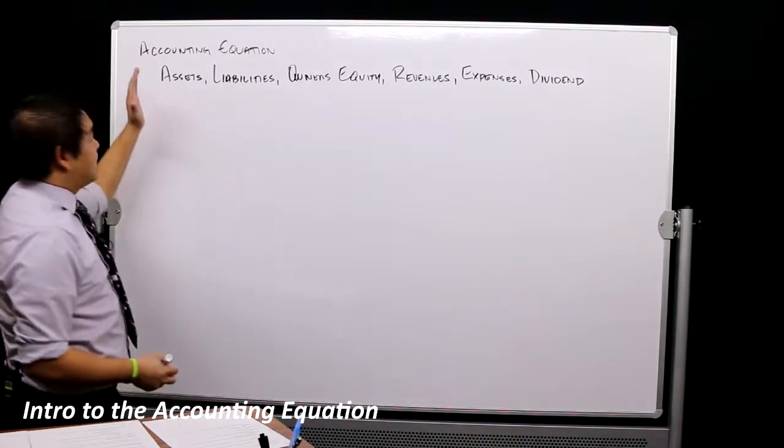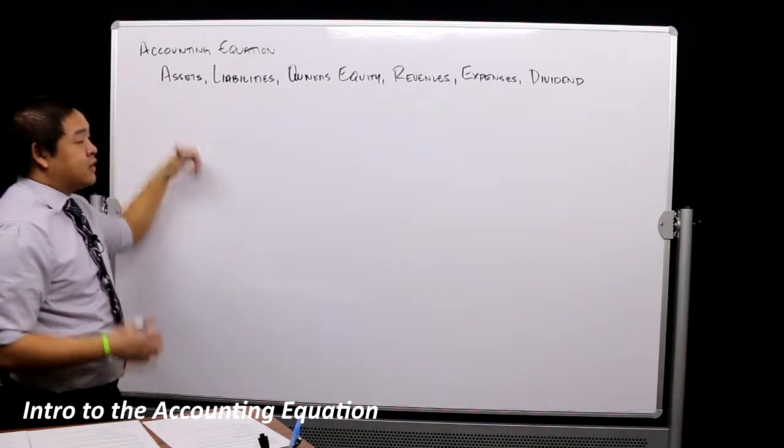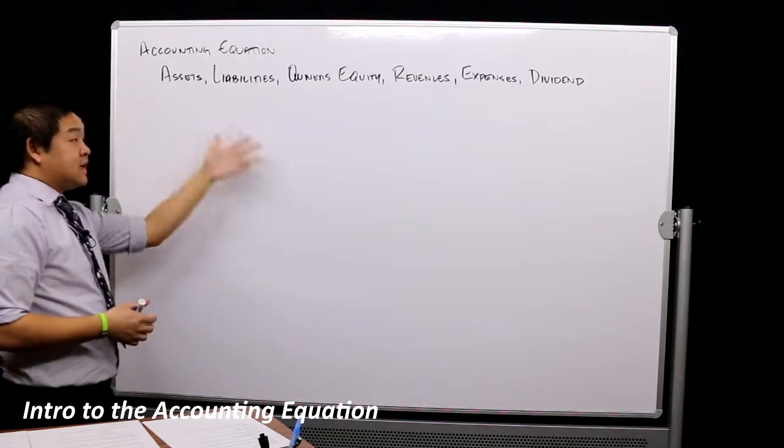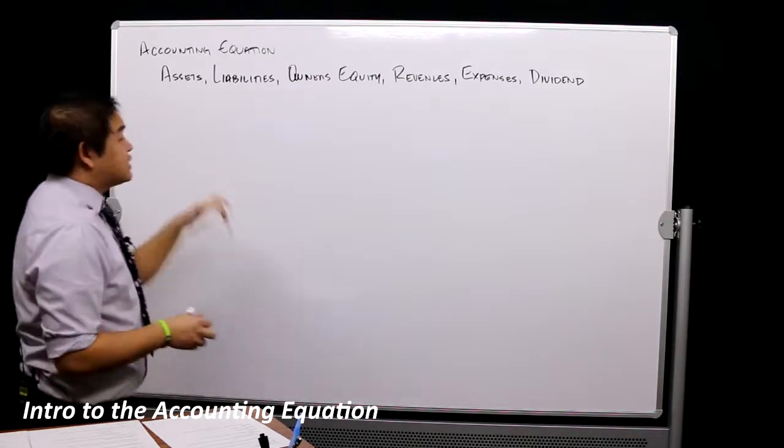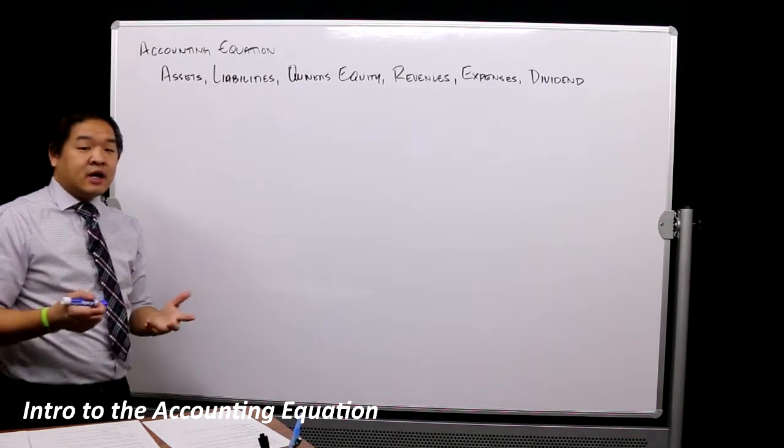Let's review some of the elements we talked about before in other lessons. These are the six categories we discussed, and they're going to be important here because we're going to talk about these six with the accounting equation.